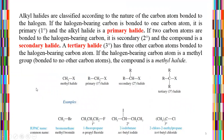Alkyl halides are classified according to the nature of the carbon atom bonded to the halogen. If the halogen-bearing carbon is bonded to one carbon atom, it is primary. If two carbon atoms are bonded to the halogen-bearing carbon, it is secondary. A tertiary alkyl halide has three other carbon atoms bonded to the halogen-bearing carbon. If the halogen-bearing carbon is a methyl group bonded to no other carbon atoms, the compound is a methyl halide.